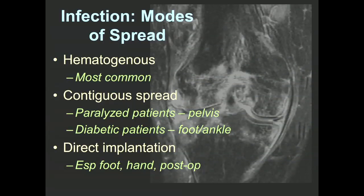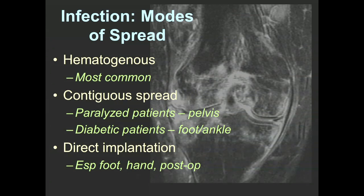The first thing you need to know is that infection has different modes of spread around the body. Hematogenous is the most common and is seen in spine infections, septic arthritis, and other conditions. Contiguous spread is seen especially in paralyzed patients in the pelvis through decubitus ulceration and in diabetic patients at the foot and ankle. Direct implantation can also occur, especially common with penetrating injuries and puncture wounds in the foot and hand, but also in postoperative situations.